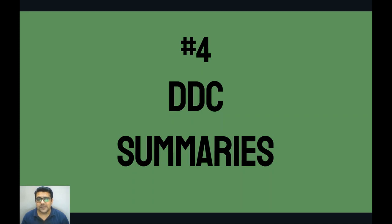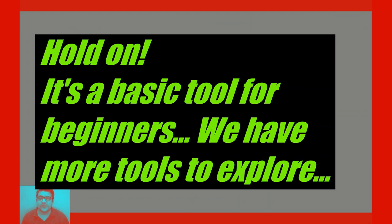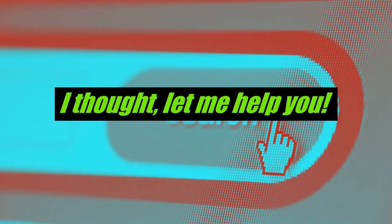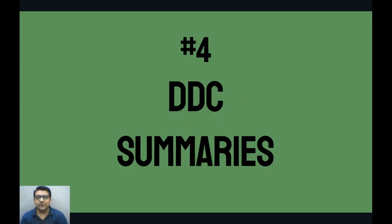At number four we have DDC Summaries. The 10 main classes, 100 divisions, and 1000 sections are available free of cost. All you need to do is open your web browser and search 'DDC summaries'. It's available in PDF format. So if you are a new librarian or you don't have any resource to perform classification, check it out.